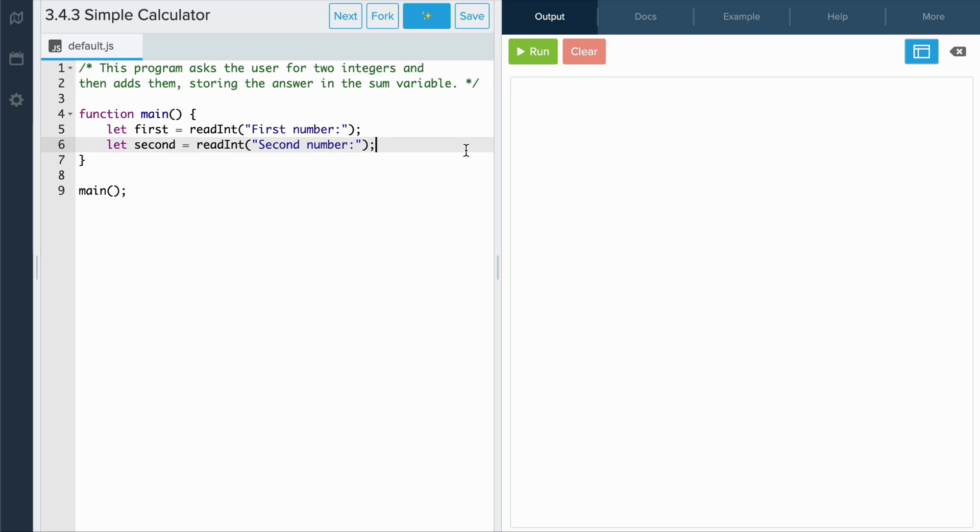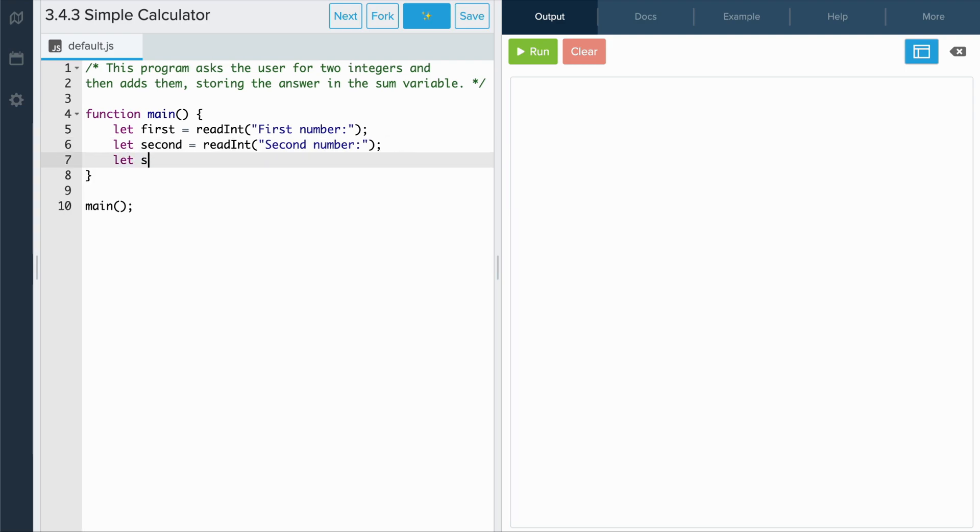Next, let's create a variable called sum and then assign it the sum of first and second. And lastly, we'll return the value of sum by using console.log.